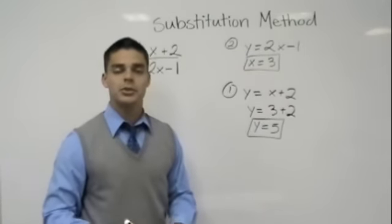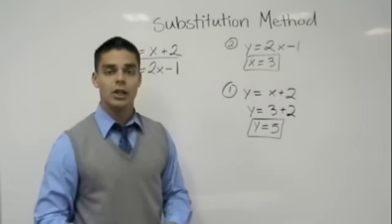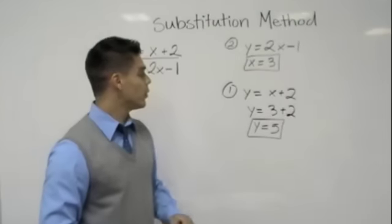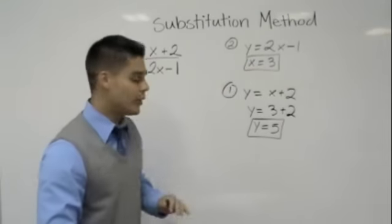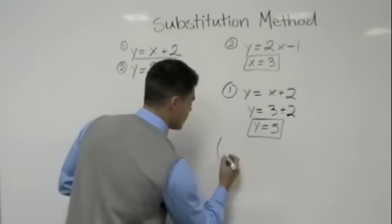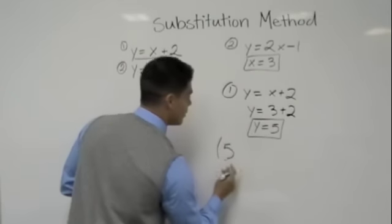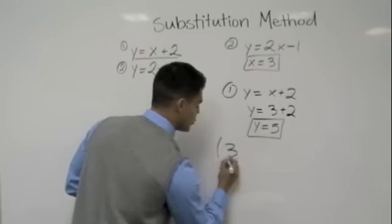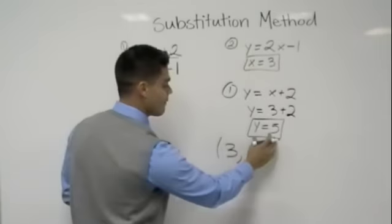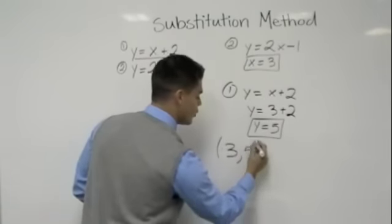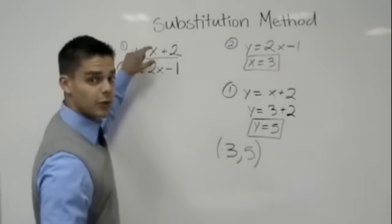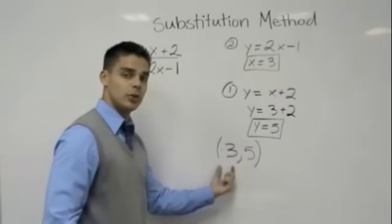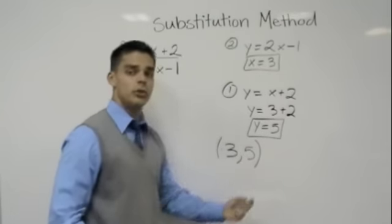Don't worry, I know substitution method always looks a little more difficult in the beginning, but we're going to go ahead and take some time. Now your answer should always be written as a coordinate point, meaning our x is 3. So I always put my x first and my y is 5. Therefore, the solution to this system of equations is x = 3 and y = 5.